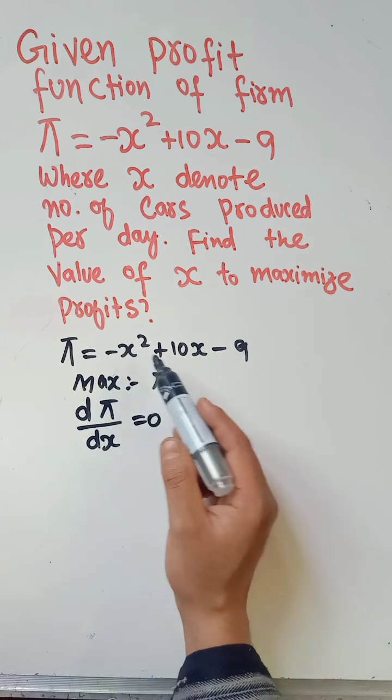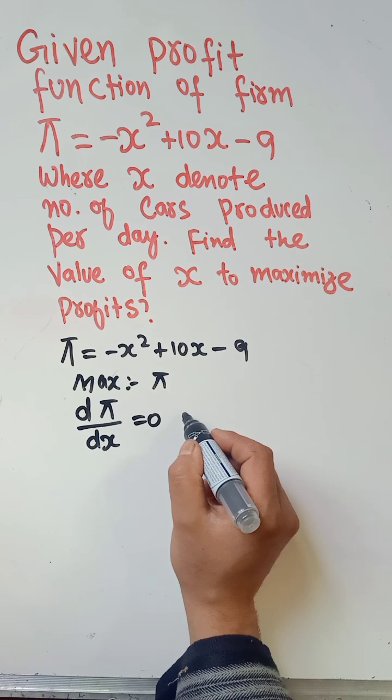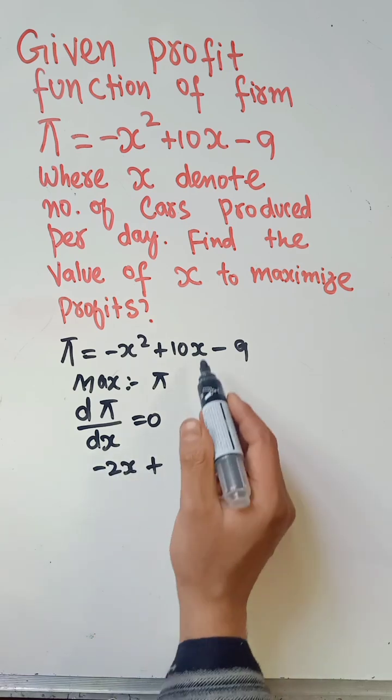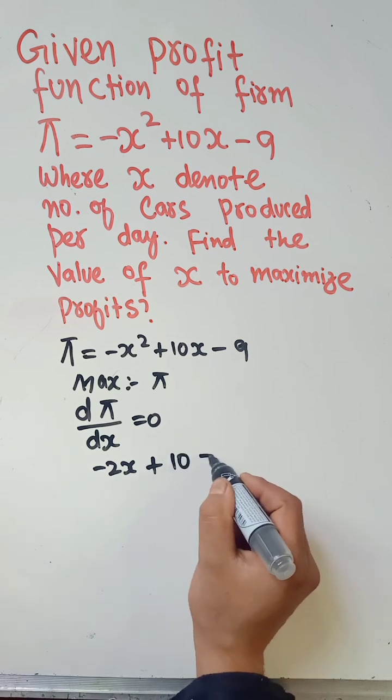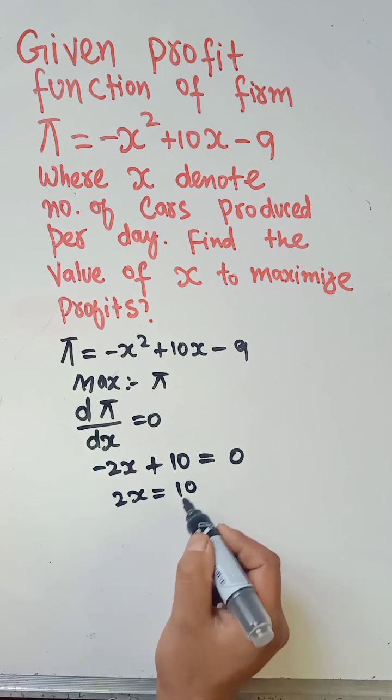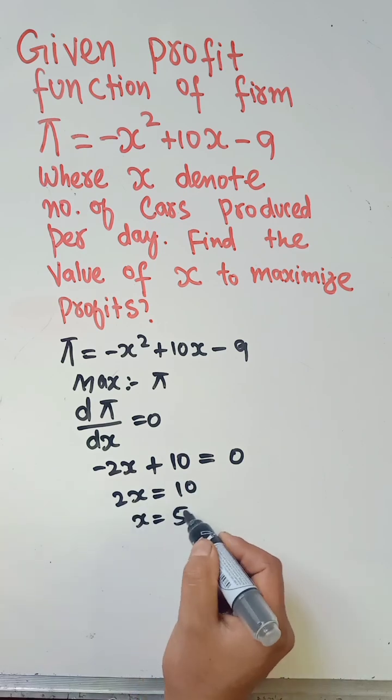The derivative of -x² is -2x, plus the derivative of 10x is 10. So we are left with -2x + 10, and we equate it with 0. That gives us 2x = 10, which implies x = 5. That means this firm should produce five cars to maximize profit.